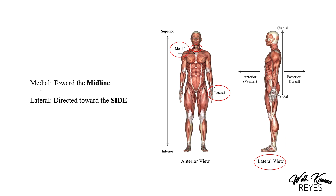The next terms are medial and lateral. Notice the midline — this is an invisible line that runs down the middle of our bodies. Medial means toward that midline, as shown by the arrow pointing toward it. Lateral is directed toward the side, going away from the midline. You'll see the lateral view of the body is just the side of the body. For example, the inner thighs are medial — toward the midline — relative to the outer thighs.